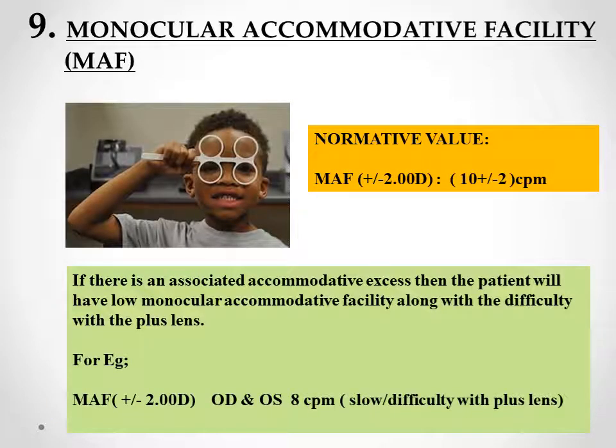The next test is the MAF, or monocular accommodative facility test. In the presence of convergence insufficiency, you will usually get a normal value in this test because it is performed monocularly and accommodation plays the dominant role over convergence. The normative value with a ±2 diopter flipper is 10 cycles per minute (SD ±2). However, if there is an associated accommodative excess with convergence insufficiency, the MAF will come low and the patient will have difficulty with the plus lens when flipping from minus to plus.